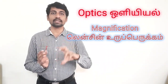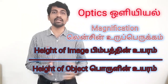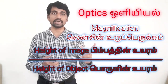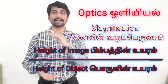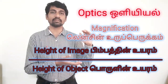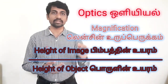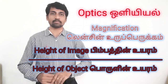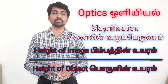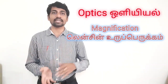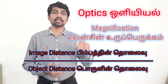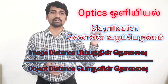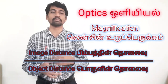Magnification is defined as the height of the image divided by the height of the object. We can also calculate magnification using image distance divided by object distance, that is V by U.